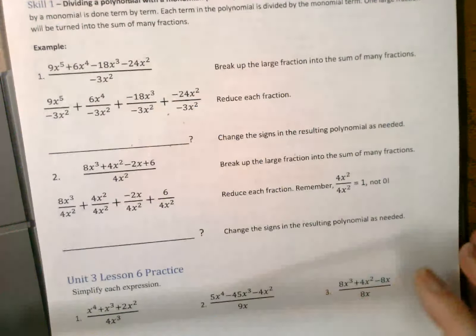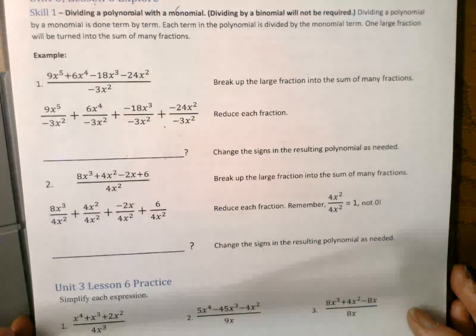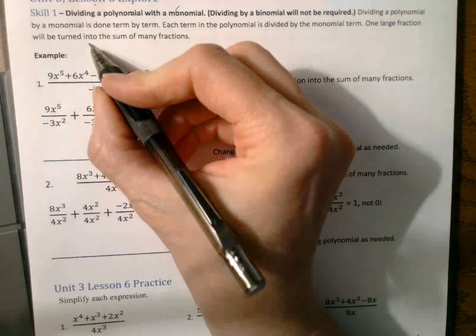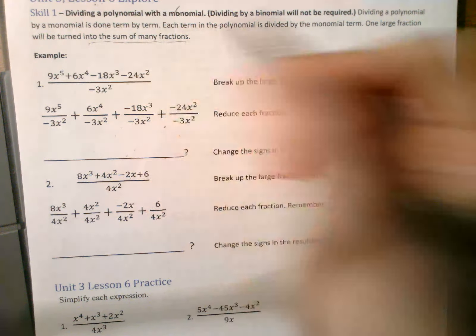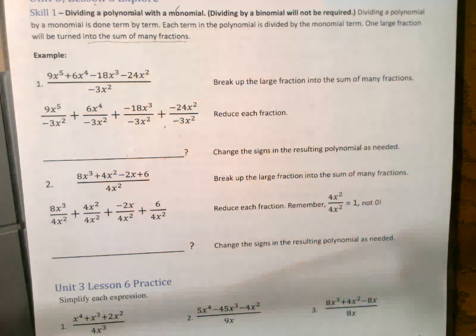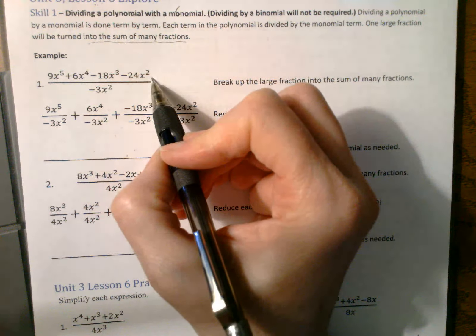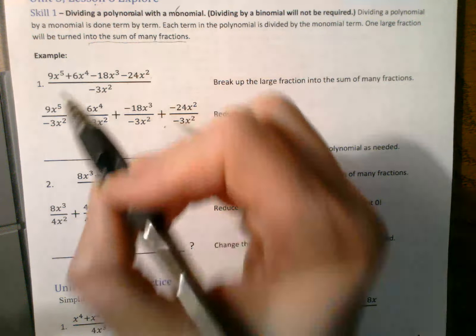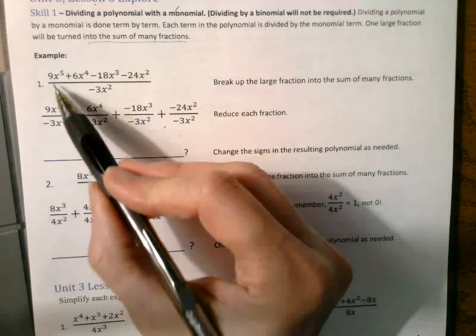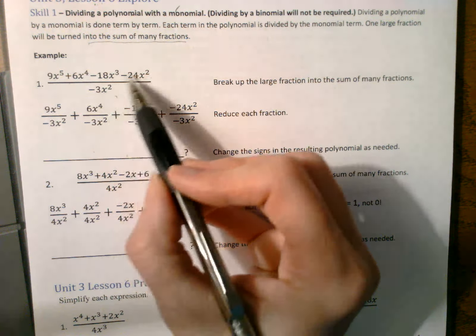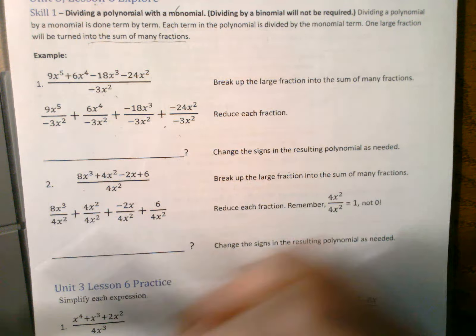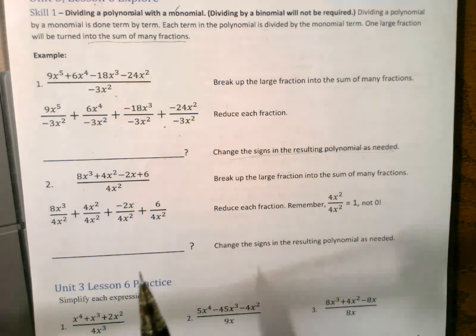All right. So let's look at these. We are dividing a polynomial with a monomial. And it's done term by term. So the rule is to turn your one large fraction into a sum of many fractions. So here we are with a polynomial, a 5th degree polynomial, and we're dividing it by a monomial. So the first thing we need to do is break up this. This denominator goes underneath each term like this. As a sum. That way you can change the signs as needed.